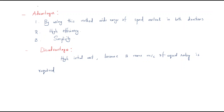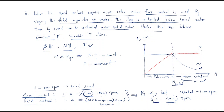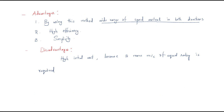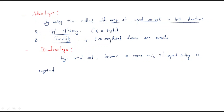Let's look at the advantages. First, by using this method a wide range of speed control is possible in both directions — from 100 rpm to 4000 rpm. Second, efficiency is very high. Third, it has simplicity — no complicated devices are required. That's why it is a very simple device with no problem with the device.